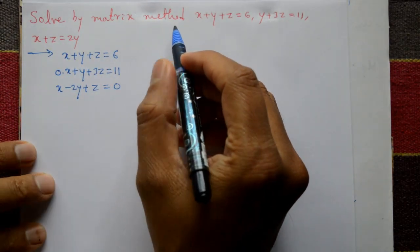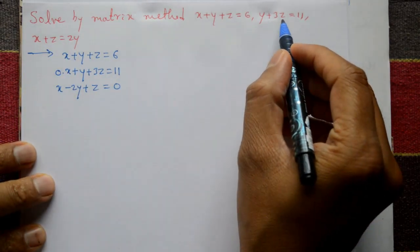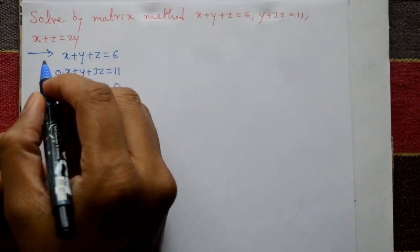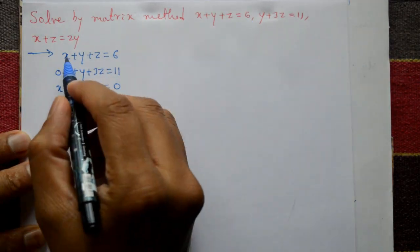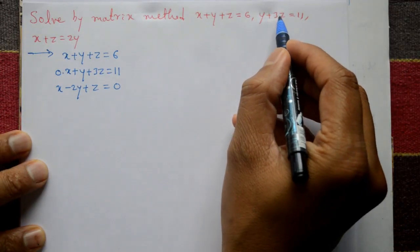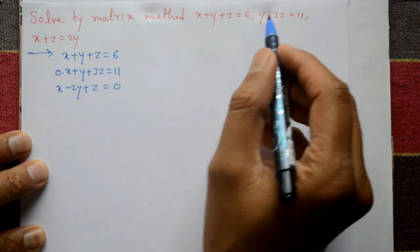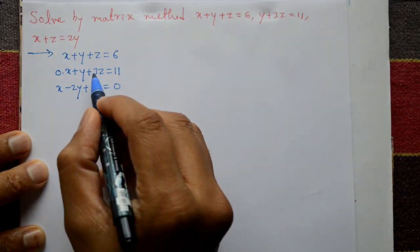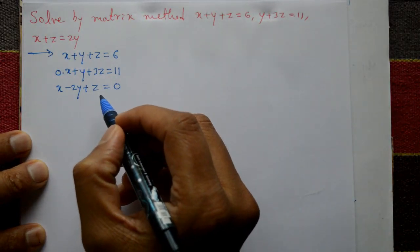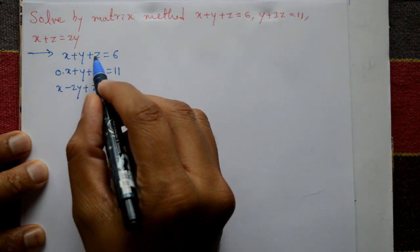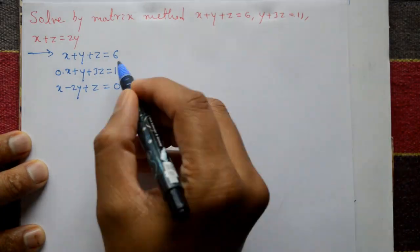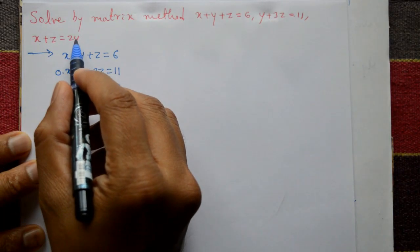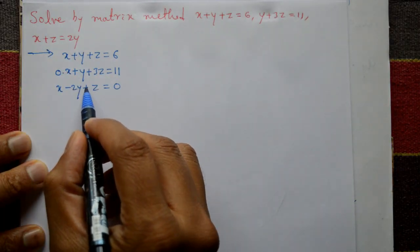Solve by matrix method. Three equations are given. First equation: x plus y plus z is equal to 6. Second equation: zero x plus y plus 3z is equal to 11. Third equation: x minus 2y plus z is equal to 0.